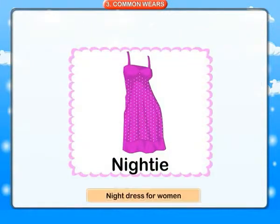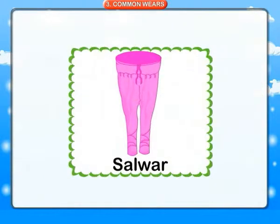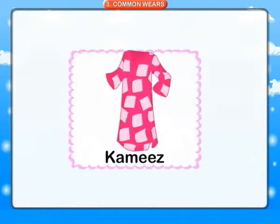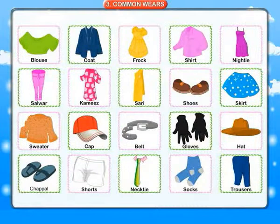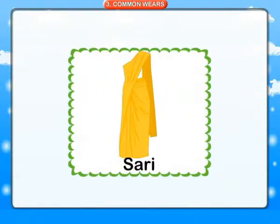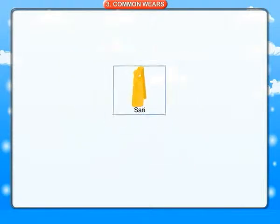Nighty: night dress for women. Salwar: a loose trousers. Kameez: a shirt-like garment with or without collar. Sari: a length of cotton or silk cloth which is strapped round the body, worn as main garment by Hindu women.